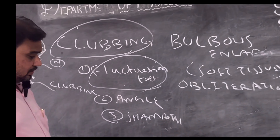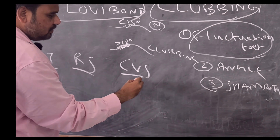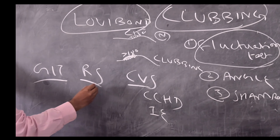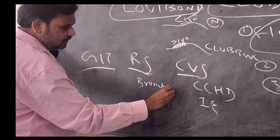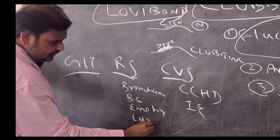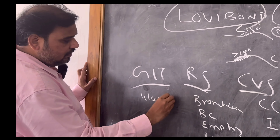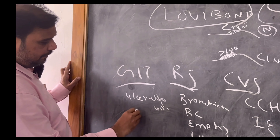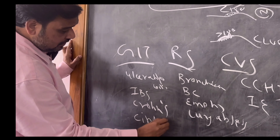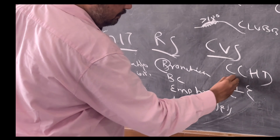Another way of organizing causes of clubbing is by system: CVS cause, RS cause, GIT cause. CVS causes: cyanotic congenital heart disease, infective endocarditis. Respiratory system causes: bronchitis, bronchogenic carcinoma, emphysema, lung abscess. GIT causes: ulcerative colitis, IBS (irritable bowel syndrome), Crohn's disease, and cirrhosis. You can present it by mnemonic CLUBBING or by system — CVS, RS, and GIT causes of clubbing.